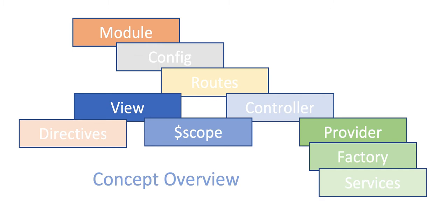AngularJS is composed of many components, as we can see in the diagram. One is the module. A module defines an AngularJS application. It is a container for the different parts of an application.